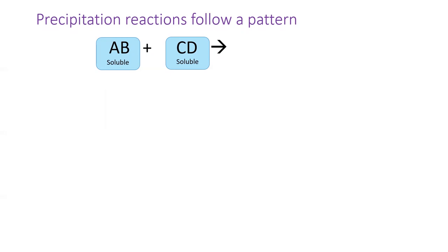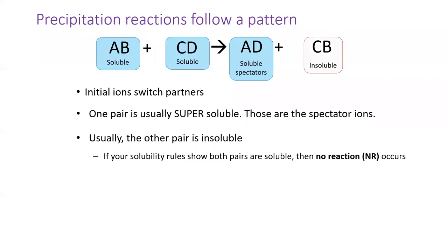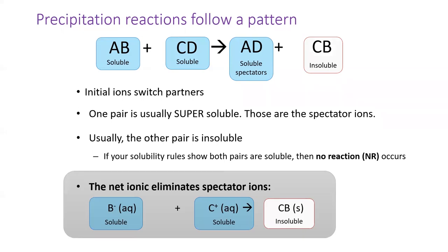Let's finish up by returning to the pattern of precipitation reactions. Two soluble substances meet, their ions switch partners. One pair is usually very soluble, which is why you should memorize the always soluble category first. This pair makes up the spectator ions. The other pair is usually insoluble, and it is the precipitate. If the other pair is also soluble, then no reaction occurs. Lastly, the net ionic reaction eliminates the spectator ions to show only the two ions meeting and forming an insoluble compound.